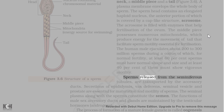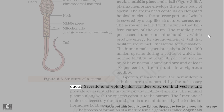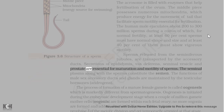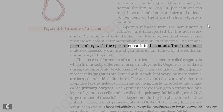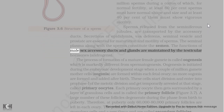Sperms released from the seminiferous tubules are transported by the accessory ducts. Secretions of epididymis, vas deferens, seminal vesicle, and prostate are essential for maturation and motility of sperms. The seminal plasma along with the sperms constitute the semen. The functions of male sex accessory ducts and glands are maintained by the testicular hormones, androgens.